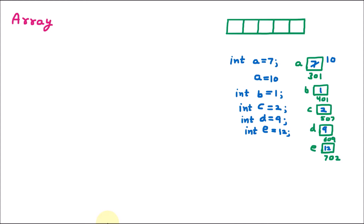If we need to store 100 or 1000 values, we don't need 1000 variables. C programming provides a solution called an array. With the help of an array, we can store multiple values together. We can say that an array stores homogeneous elements — meaning elements of the same type.